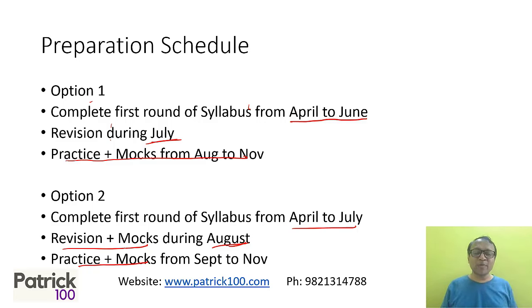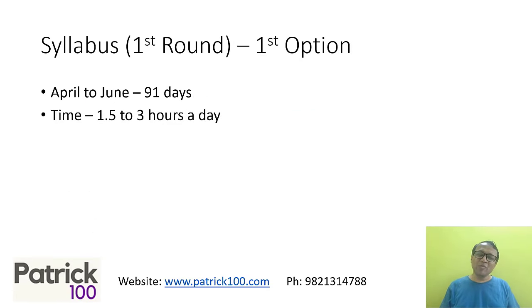Let's focus on stage one of preparation from April onwards. For option one, Plan A, you have 91 days from April to June. You should give approximately 1.5 to 3 hours a day for mathematics only, not including other sections. Overall, you can give around 4 to 5 hours a day total.